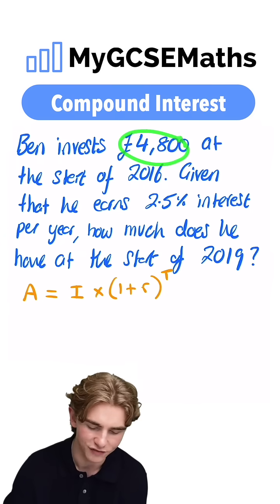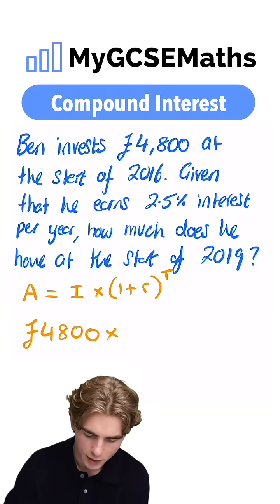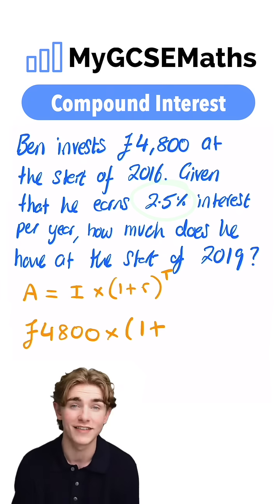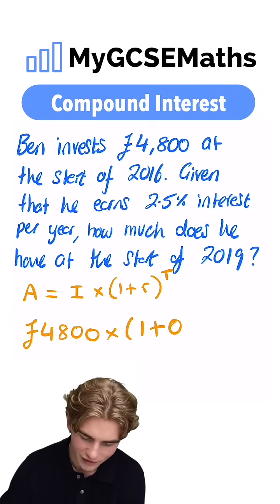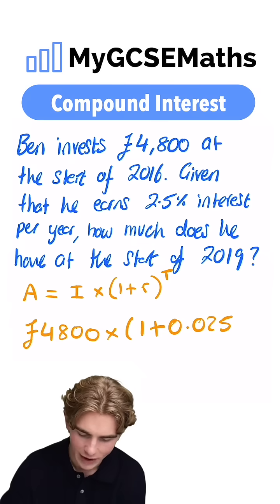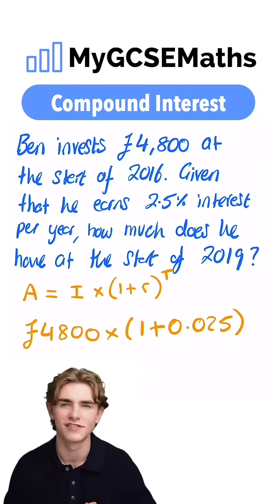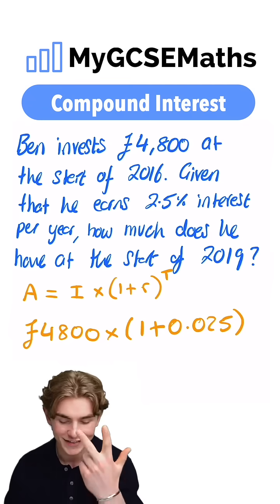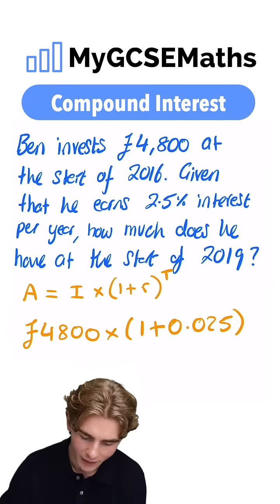Our initial amount is £4,800, so we have £4,800 multiplied by 1 plus our interest rate of 2.5%. Writing that as a decimal, we divide by 100 to get 0.025. For our number of time periods: he starts at the start of 2016, so we have 2016, 2017, and 2018 earning interest at the start of 2019. How many years have gone by?